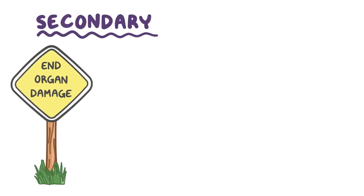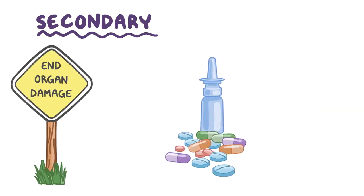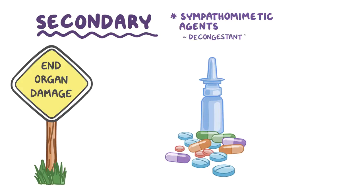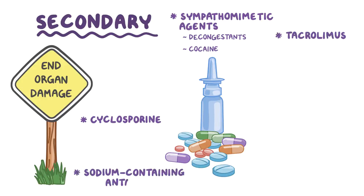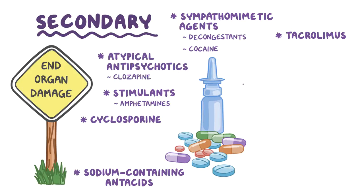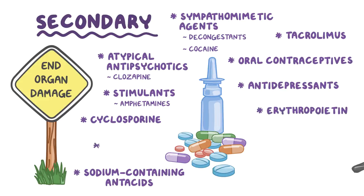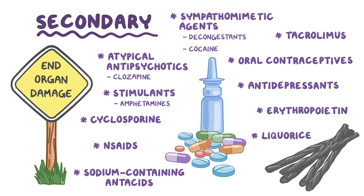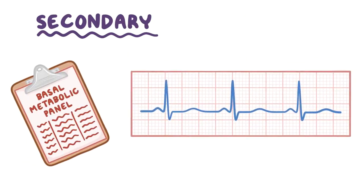It's also important to identify signs of end-organ damage and whether the patient takes any medications or exogenous substances that can worsen hypertension: sympathomimetic agents like decongestants or even cocaine, cyclosporine or tacrolimus, sodium-containing antacids, stimulants like amphetamines, atypical antipsychotics like clozapine, antidepressants, oral contraceptives, erythropoietin, and even NSAIDs and licorice. A basal metabolic panel and electrocardiography should be performed to screen for secondary forms of hypertension.